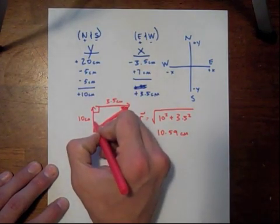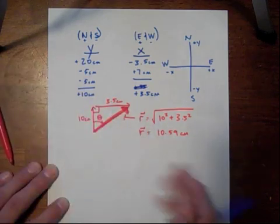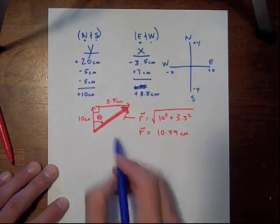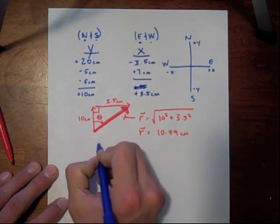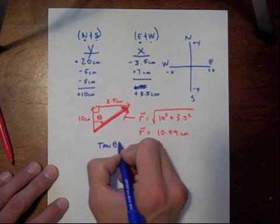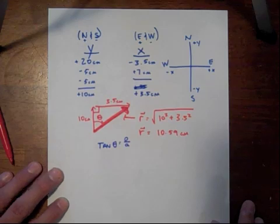But just like before, we're not done. We have to find that angle. Now, to find that angle, I'm not using a protractor because I just guessed on the drawing. We're going to use trigonometry. So, we know that the tangent of any angle is the side opposite of that angle over the side adjacent to that angle.